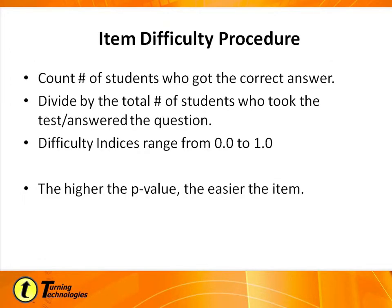Just to show you the procedure: count the number of students who got the correct answer — either 15 or 45 in the examples. Divide that total by the number who answered the question correctly. Difficulty indexes range from 0 to 1. The higher the p-value, the easier the item.